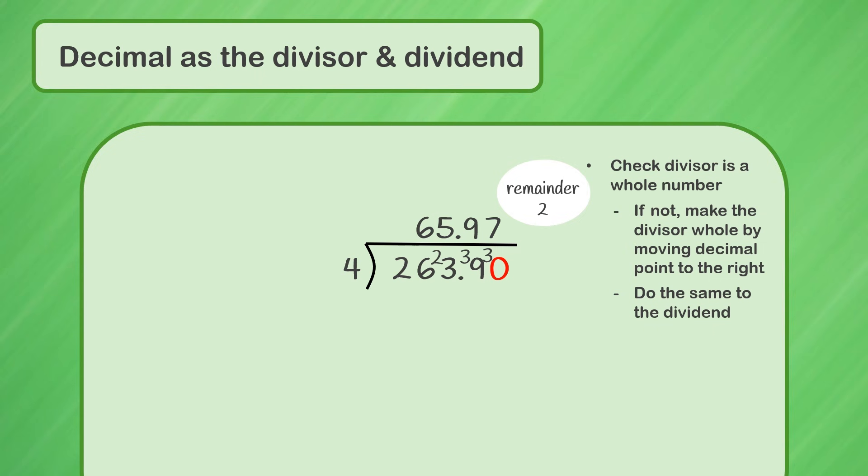Again, we have a remainder, but again we can add a 0 to our dividend and keep going. Our 2 leftovers go in front of the 0, so now we have 20. How many times does 4 go into 20? 5. And it goes evenly, which means there are no leftovers, which means we've finished. 263.9 divided by 4 equals 65.975. This means that 2.639 divided by 0.04 is the same, 65.975.